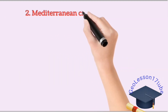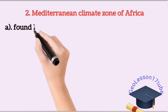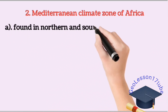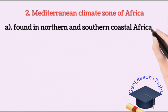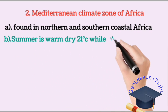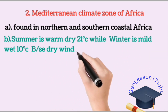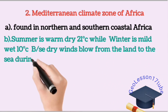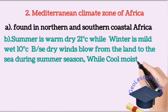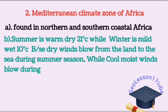The Mediterranean climate zone of Africa. This region is found in northern and southern coastal areas of Africa. The Mediterranean climate zone is known for warm, dry summers with 21 degrees Celsius, because winds blow from the land to the sea during the summer season. Winter is mild and wet with 10 degrees Celsius.